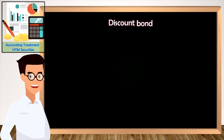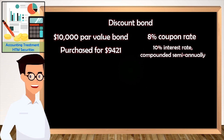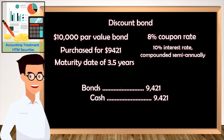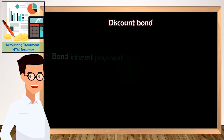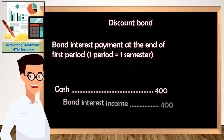Here is an example. Suppose an insurance company purchases a $10,000 par value bond for $9,421 at the beginning of year 2000 with a coupon rate of 8%, interest rate of 10% compounded semi-annually, and maturity date of 3.5 years. The accounting entry for bond purchase will be as shown. The accounting entry to record the receipt of bond interest payment at the end of the first period of one semester is as shown.